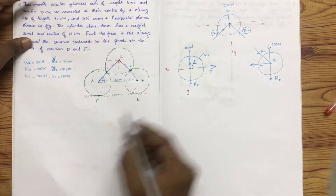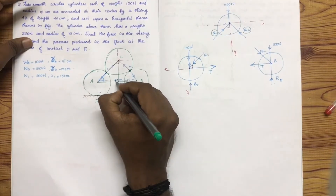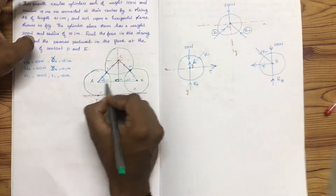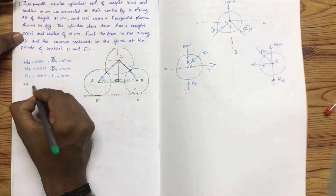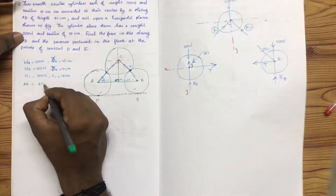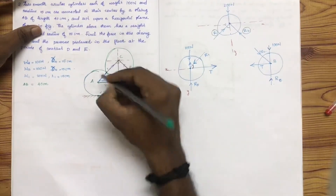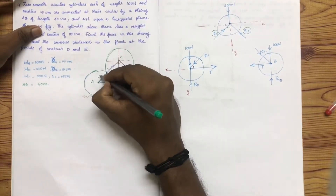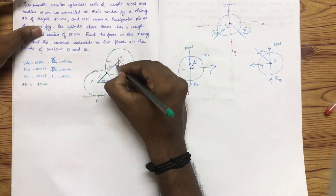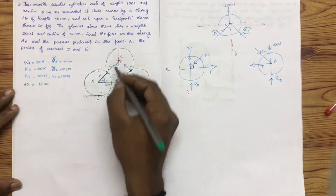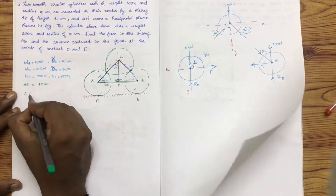This is a right angle triangle. The string length AB is equal to 40 cm. We have radius 15 cm for each cylinder, so AP equals 15 + 15 = 30 cm. We need to find angle theta using the triangle ABC.